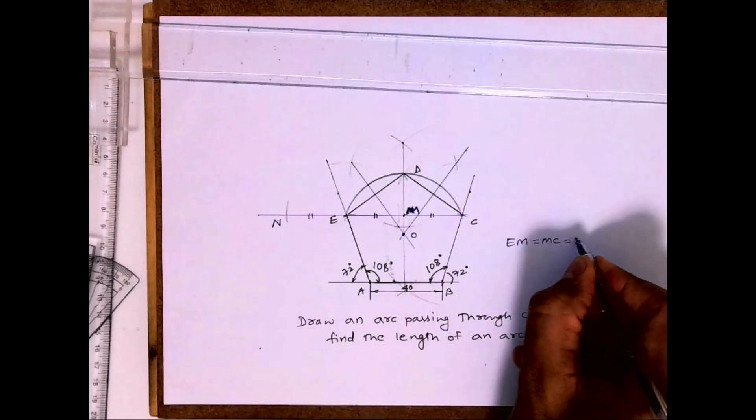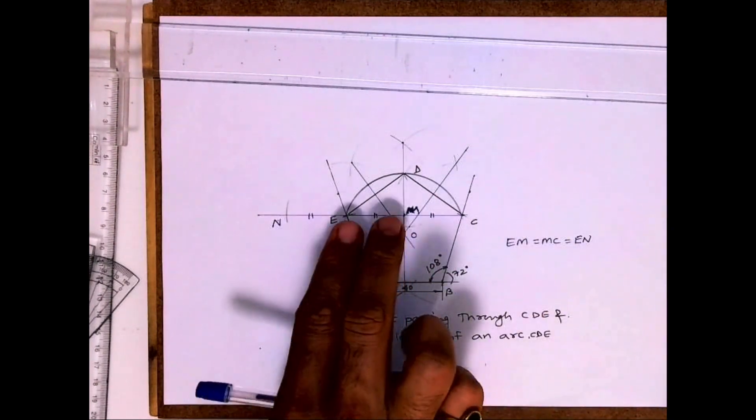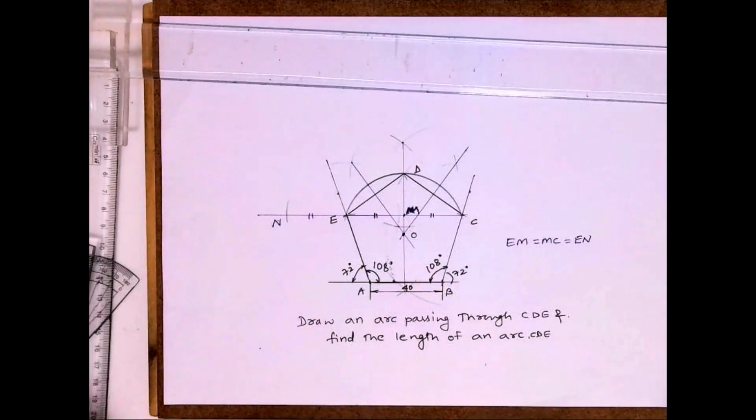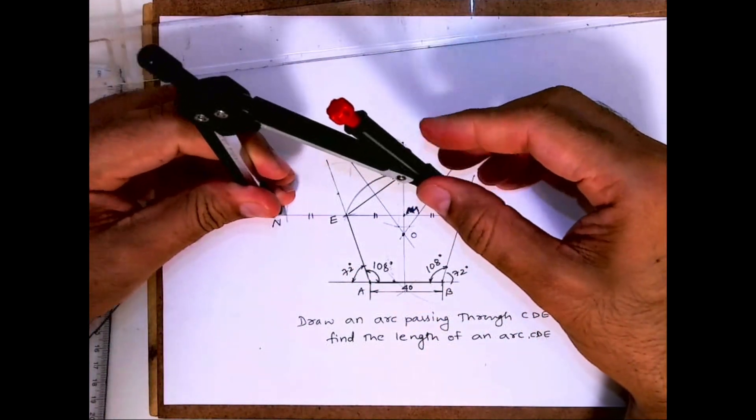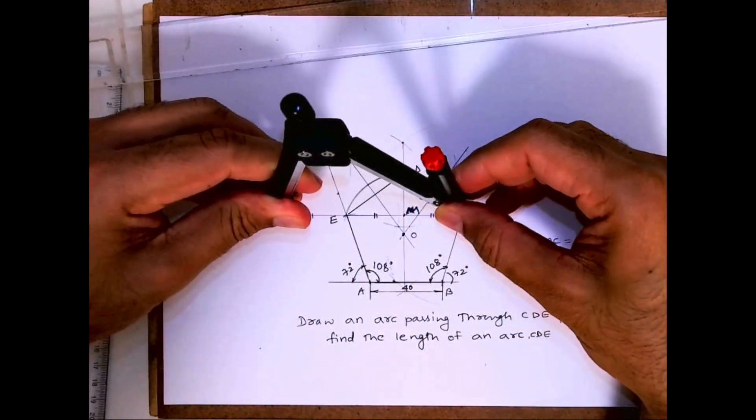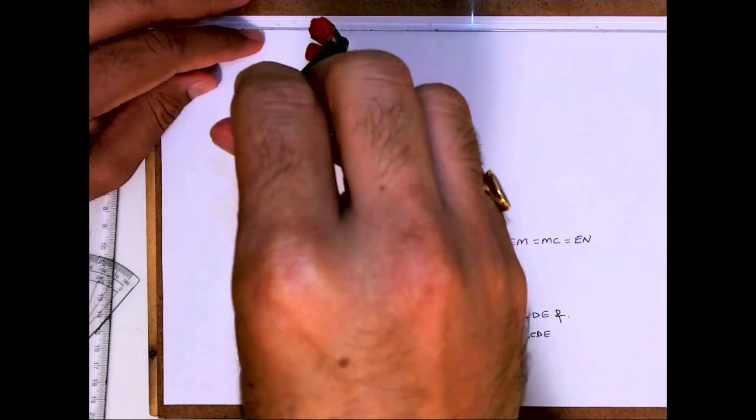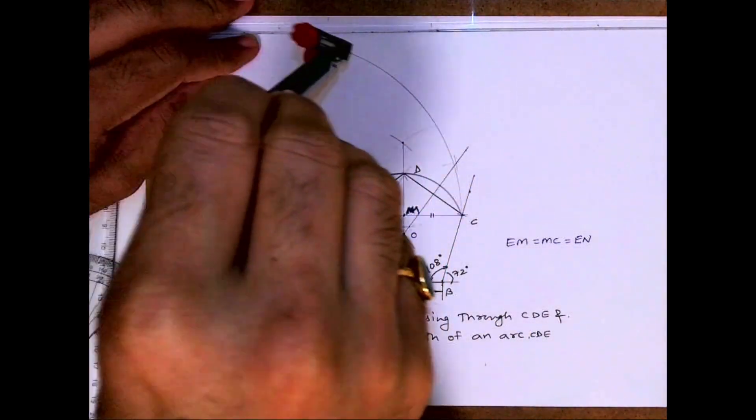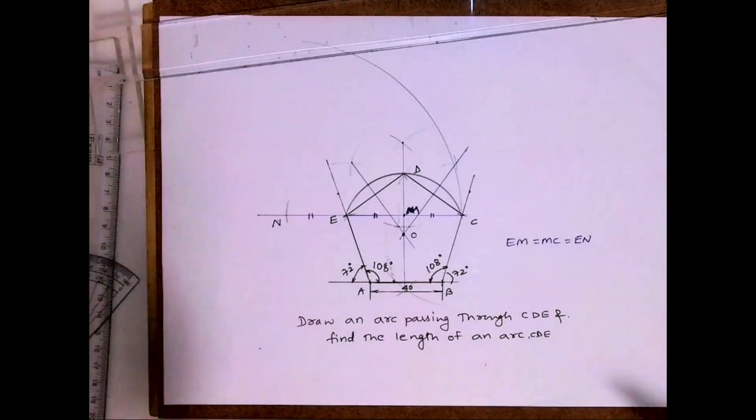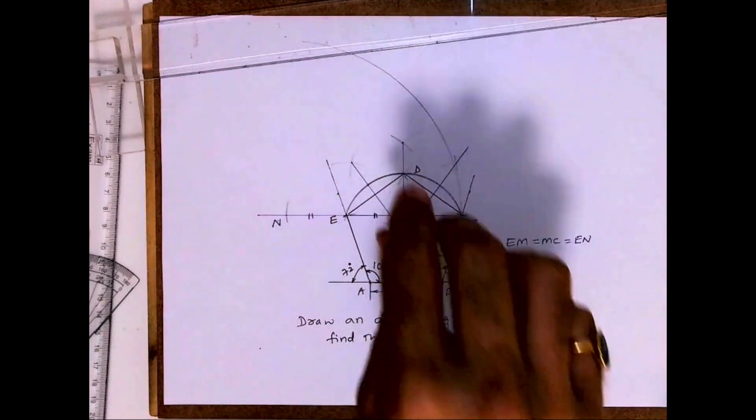So EM is also same, all three segments are same. Now take N to C and draw an arc. N to C draw arc.